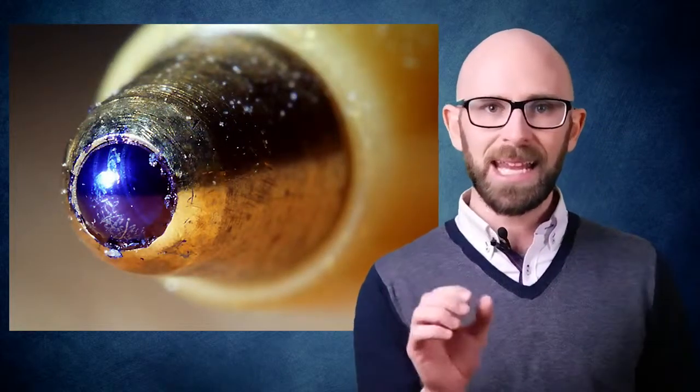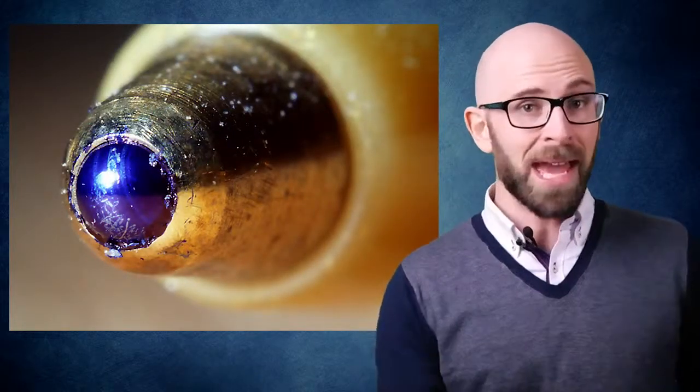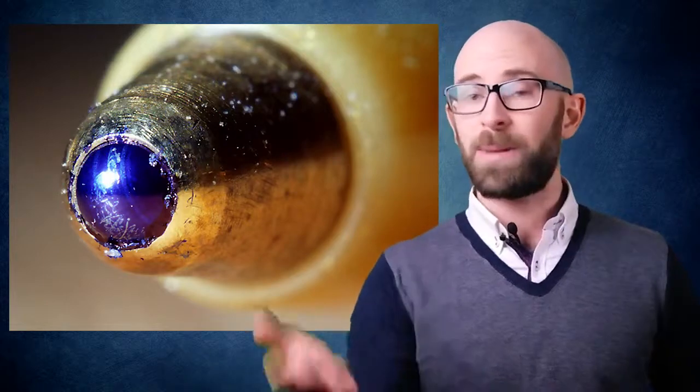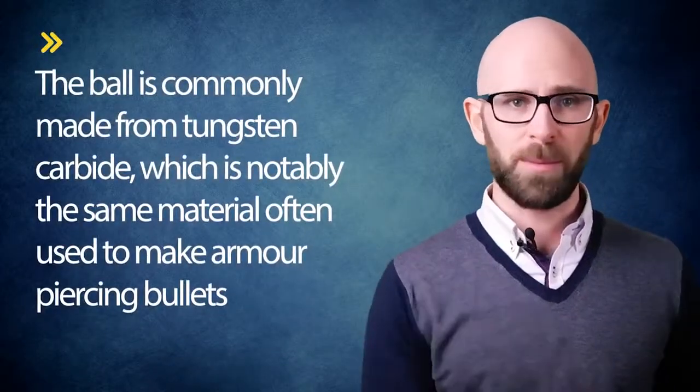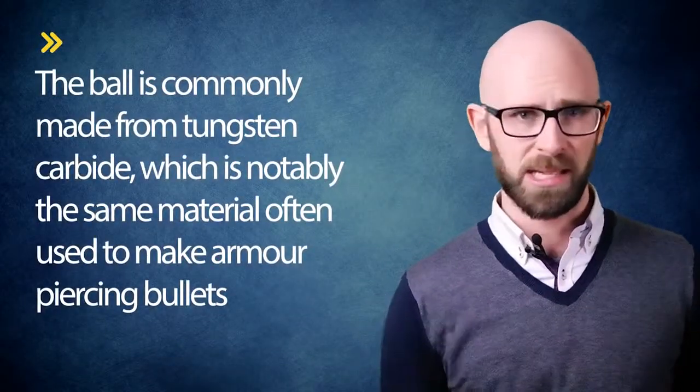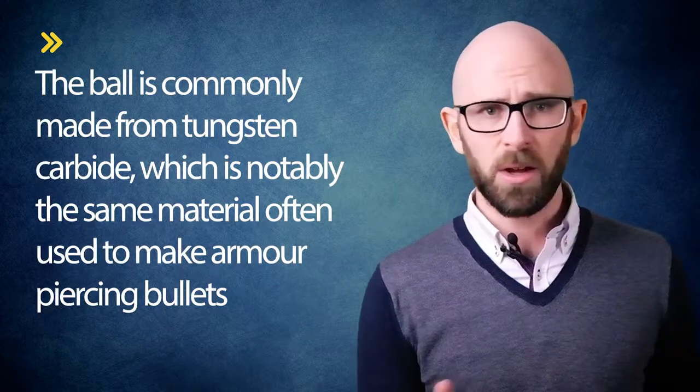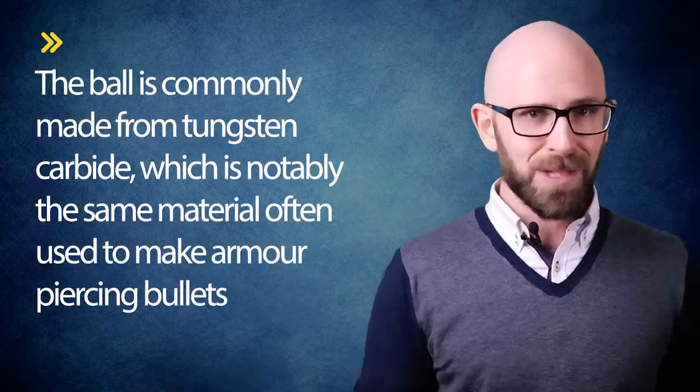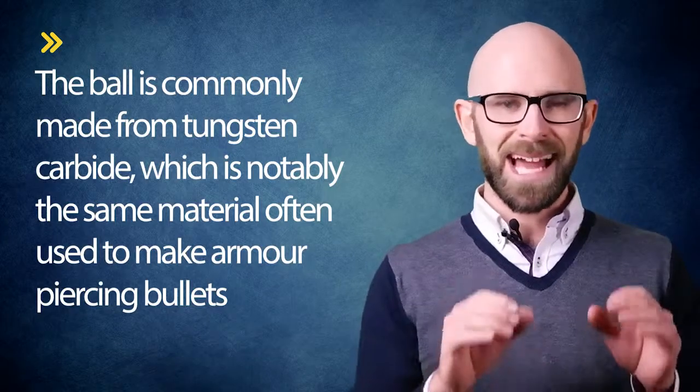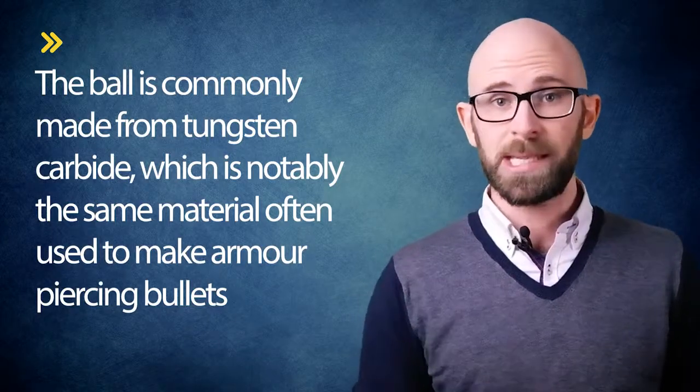As the name would suggest, ballpoint pens work by utilizing tiny metal ball bearings. In the case of the most famous ballpoint pens of all, Bic, the ball is commonly made from tungsten carbide, which is notably the same material often used to make armor-piercing bullets. After the material has been shaped, it's then highly polished in a machine that uses a paste made from diamonds. Yes, we're still talking about those pens that banks give away for free and you've lost three of today.